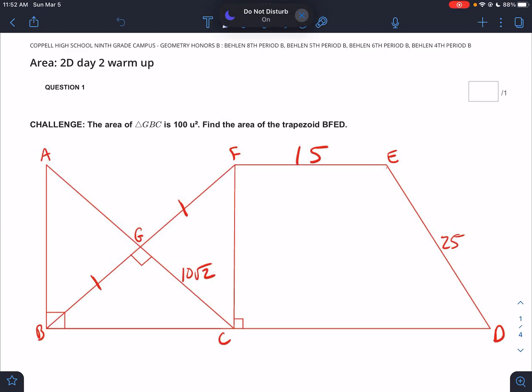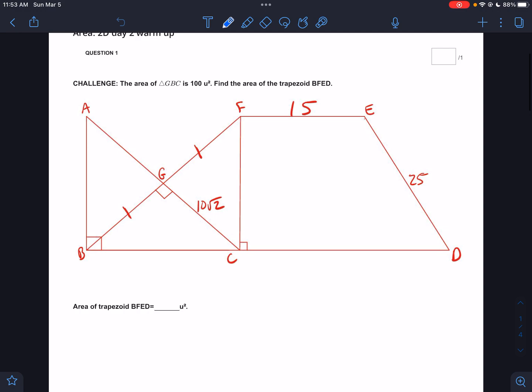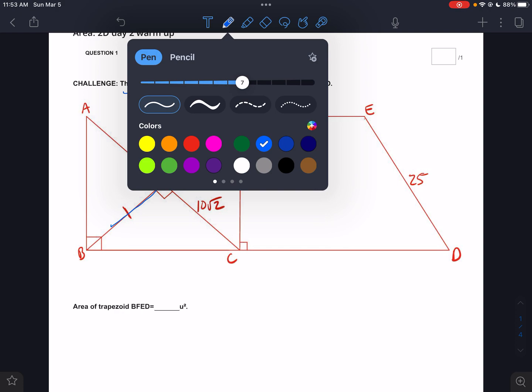Hey, my little babies, this is a walkthrough of today's warm-up just so that we have access to this. The first one's definitely a challenge question - there's a lot to know and a lot to do. We got a complex figure here. It says the area of triangle GBC - here's triangle GBC hanging out right here - so the area of that triangle we know is 100 units.